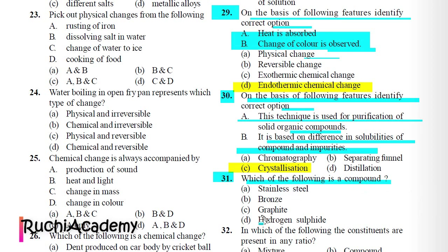Question 31: Which of the following is a compound? A) Stainless steel, B) Bronze, C) Graphite, D) Hydrogen sulfide. Correct answer is D) Hydrogen sulfide. Hydrogen sulfide is a compound of hydrogen and sulfur.